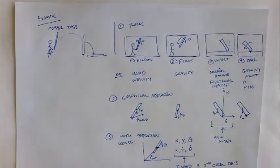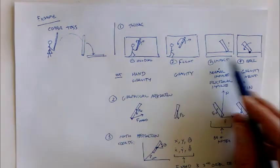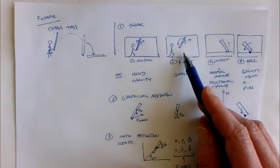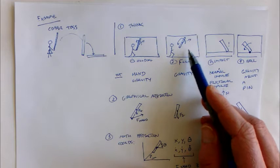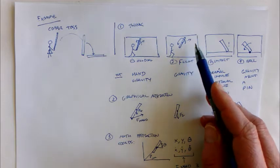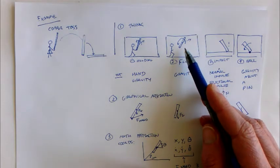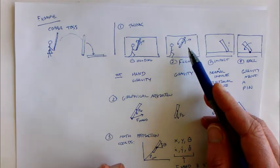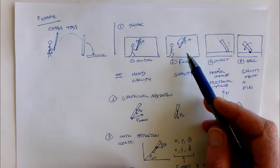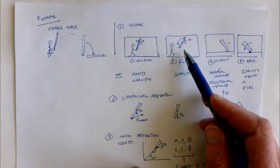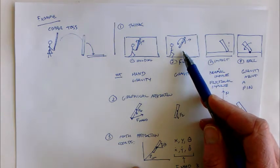I've done the simplest case here of the four that we're thinking about with this caber toss, which is the flight case. In the flight case, it's fairly easy to think about what's happening because there's only one force being applied at the center of mass, so it's pretty easy to see how the motion is going to take place.